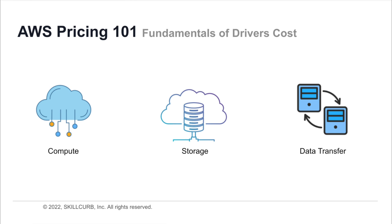Next, we have storage. AWS charges you per gigabyte. Even if you use very little space, you'll be paying for that space — as little as 1 GB. This means you don't have to worry about scaling, because if you are using more resources, you would be paying for those resources according to your scale.